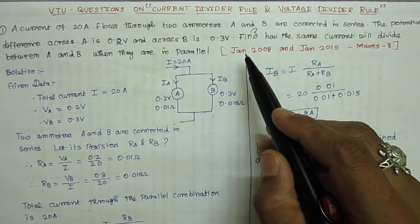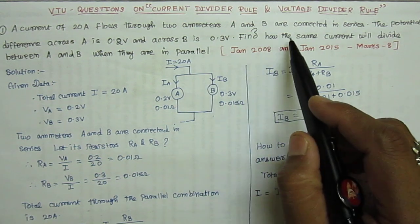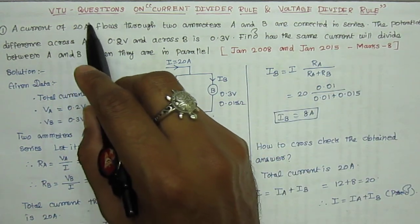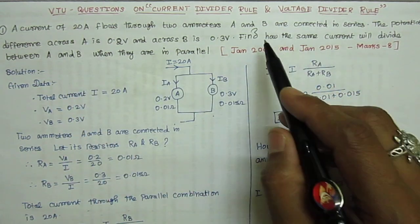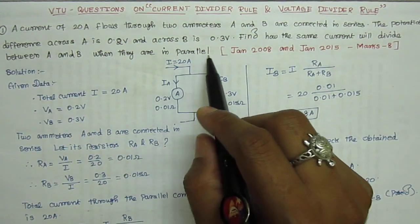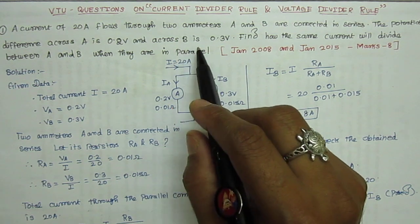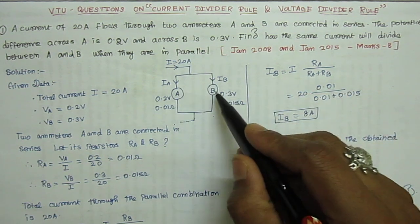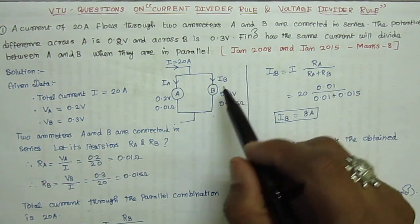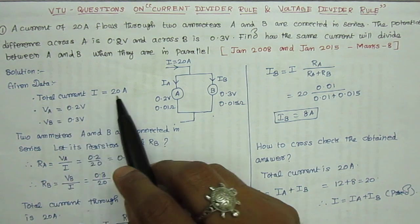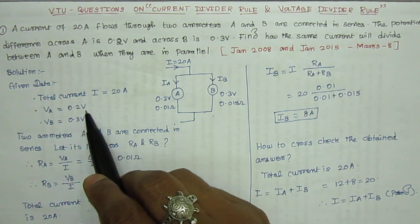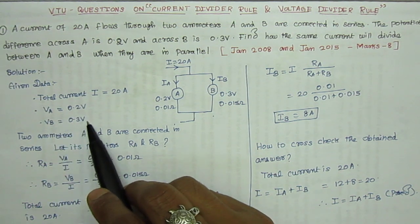In this question, 2 ammeters are given. In the first case, the 2 ammeters are connected in series and the total current flow is 20 amps. In the second case, if the same current is divided between A and B when they are connected in parallel, what is the current across ammeter A and ammeter B? That is the current divider rule. The given data: total current is 20 amps, voltage across ammeter A is 0.2 volt, and voltage across ammeter B is 0.3 volt.